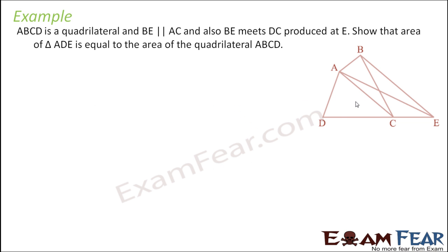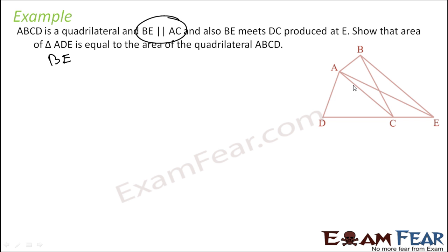ABCD is a quadrilateral. BE is parallel to AC. Then produce AE. We will show that area of triangle ADE is equal to the area of quadrilateral ABCD.